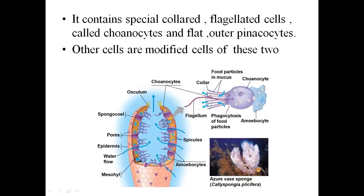In Phylum Porifera, different types of cells are present. The two especially notable cells are Choanocytes and Pinacocytes.